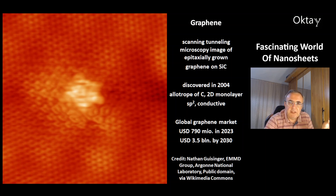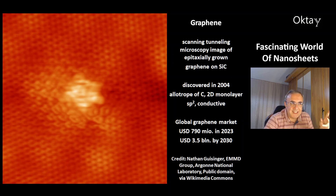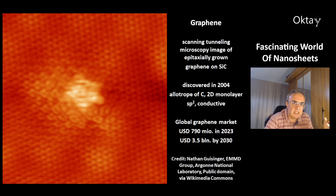Graphene was predicted not to be producible, but it was discovered in 2004 with a very simple method. It is an allotrope of carbon — allotrope means a form of a chemical element, for example allotropes of oxygen are O2 in air and O3 ozone.